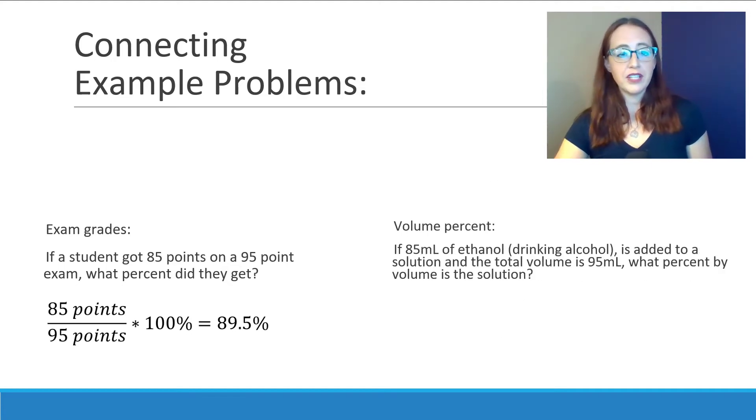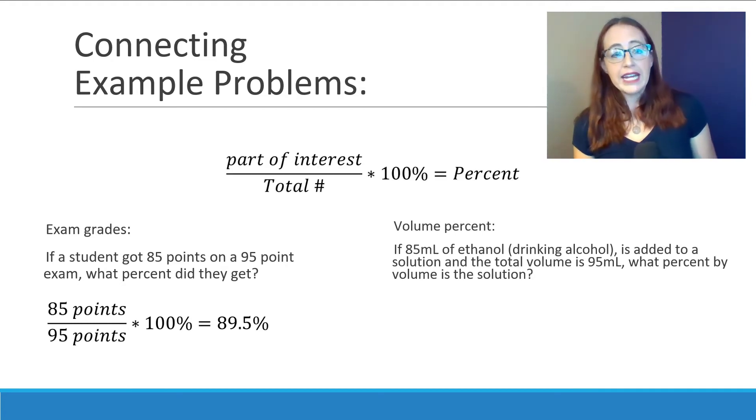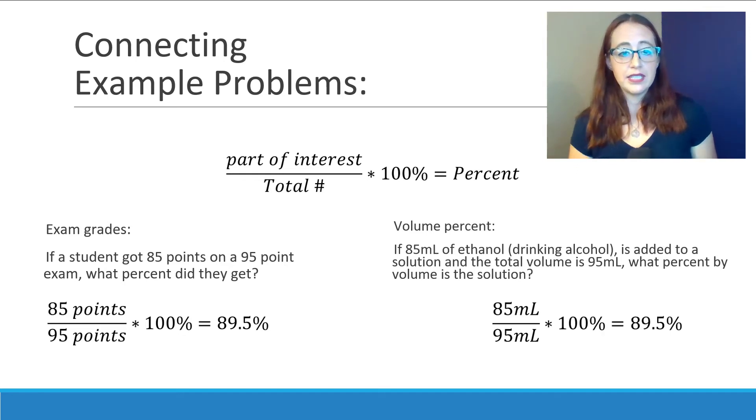Let's do the same thing for a volume percent example now. In this case, we have 85 milliliters of ethanol, which is the sort of alcohol that people drink, and that's added to a solution to get a total volume of 95 milliliters. What is the percent by volume of the solution? Just like in our exam grade question, we're going to put the part of interest, the 85 milliliters, over the total volume, which is 95 milliliters, to get our total percent or to get our percent of ethanol in the solution.